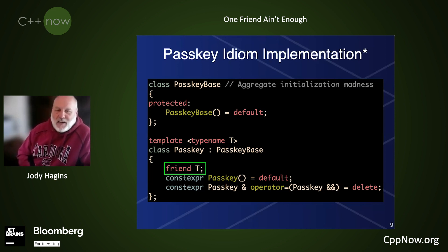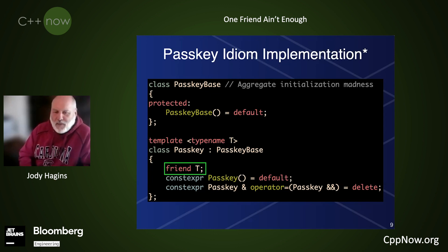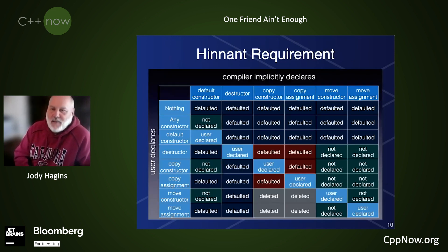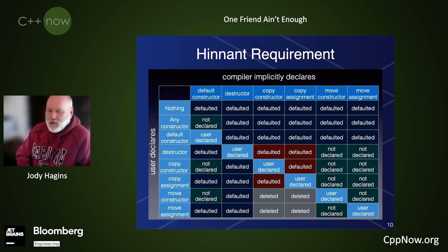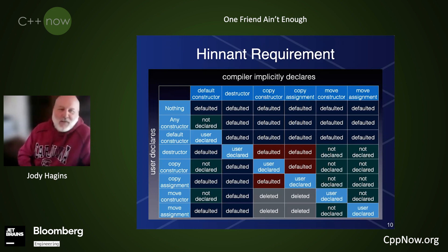So the deleted move constructor is ample justification to comply with the Hennet requirement, which is that this chart must appear somewhere in every C++ presentation. This is my favorite slide of all time.